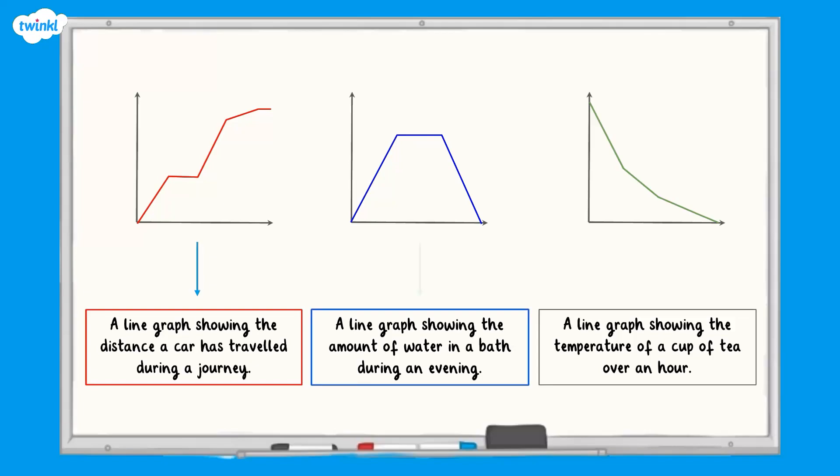This is shown by the blue graph. The temperature of a cup of tea would decrease over time. So this is shown by the green graph.